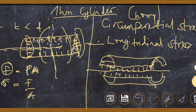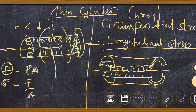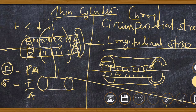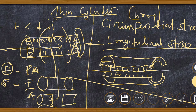Longitudinal stress is a stress that acts along the longitudinal axis of the material. For example, if the cylinder tends to cut like this — dividing it into two parts along its length — that kind of cutting in the material is what we call longitudinal stress.